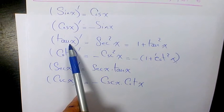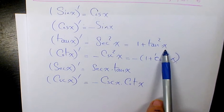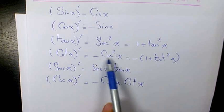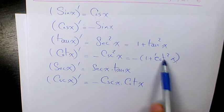Derivative of tan x is secant squared x or 1 plus tan squared x. Derivative of cotan x is negative cosecant squared x or negative 1 plus cotan squared x.